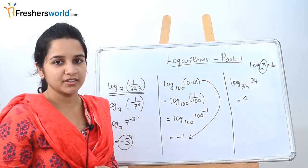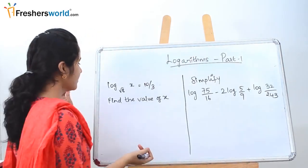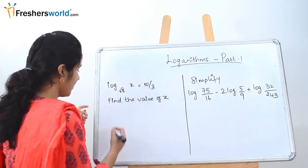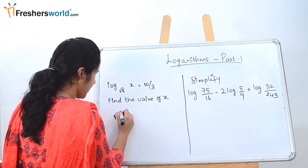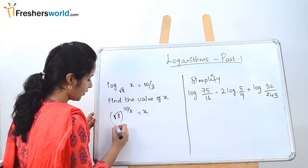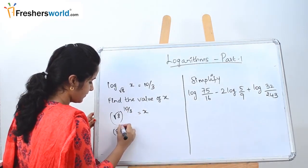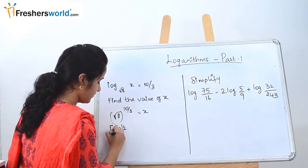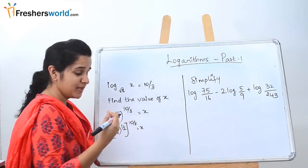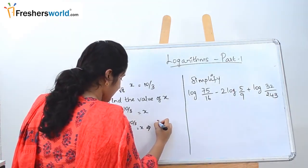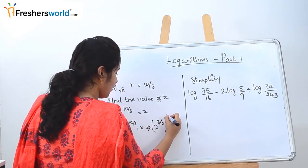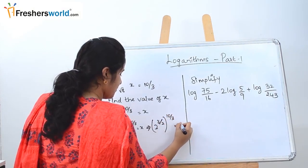The next question is: log x to the base root 8 is equal to 10 by 3 — find the value of x. As usual, root 8 to the power 10 by 3 is equal to x. Root 8 can be written as 8 power 1 by 2, so we have (8 power 1/2) to the whole power 10/3 equal to x. Since 8 is nothing but 2 power 3, we already have 1 by 2, giving us (2 power 3/2) to the whole power 10/3 equal to x.